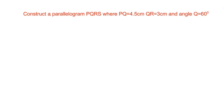The parallelogram is called PQRS, where PQ is equal to 4.5 centimeters and QR is equal to 3 centimeters and angle Q is equal to 60 degrees. In a parallelogram, opposite sides are equal. So PQ is equal to SR is equal to 4.5 centimeters, and also QR is equal to PS is equal to 3 centimeters.